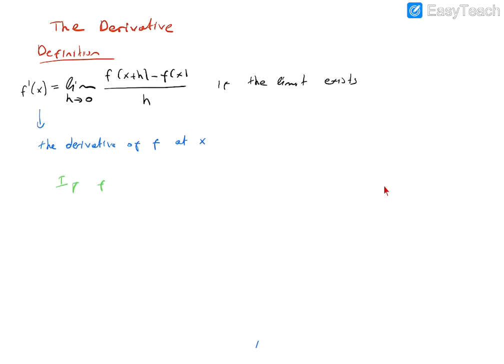If f prime of x exists for each x in the open interval a, b, or all real numbers, then f is said to be differentiable over the open interval a, b. If this is differentiable everywhere, it is simply said to be differentiable.